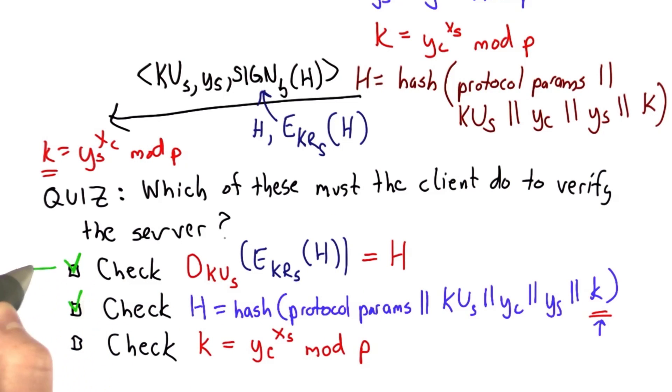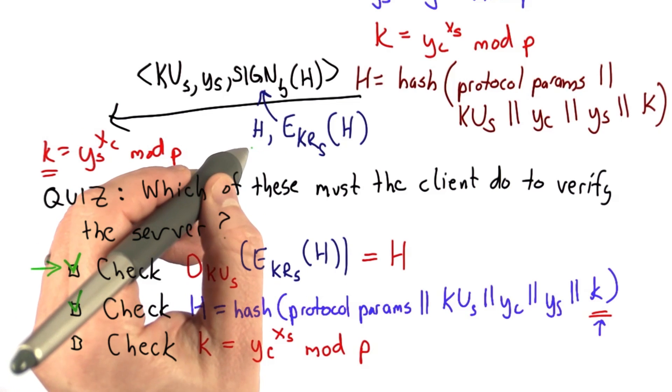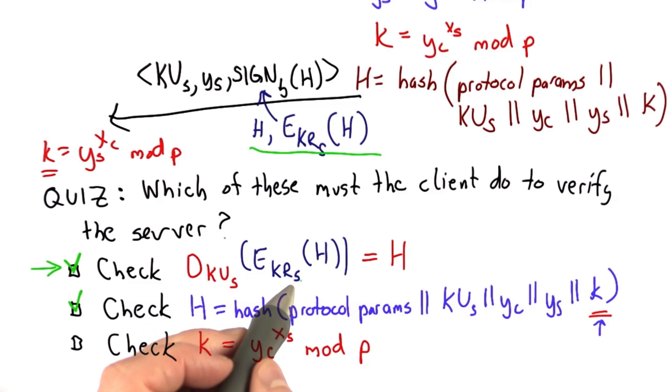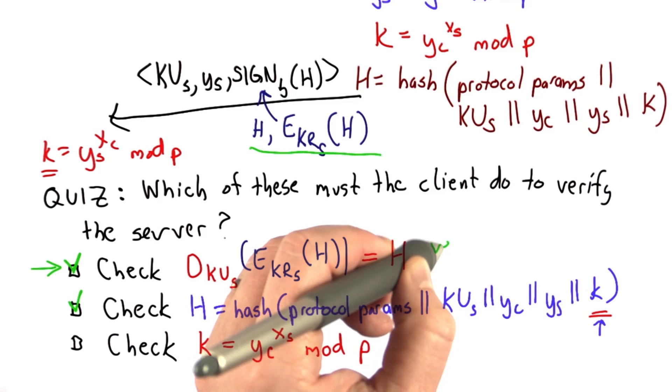So the answer is the first two. The first one is checking the signature. We're checking the signature here by decrypting using the public key. That verifies that this message was created by someone who knows the private key, so we've verified the signature.